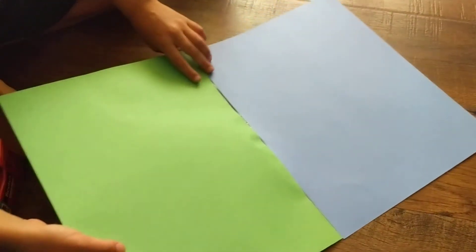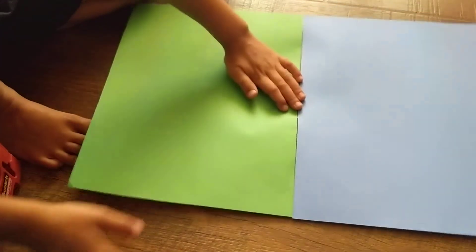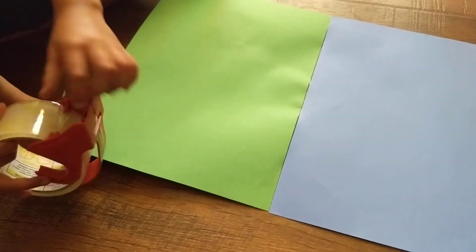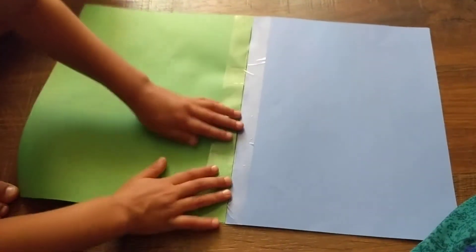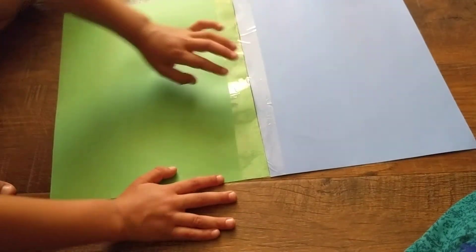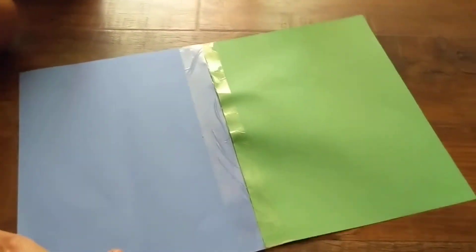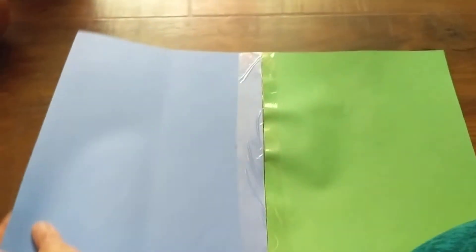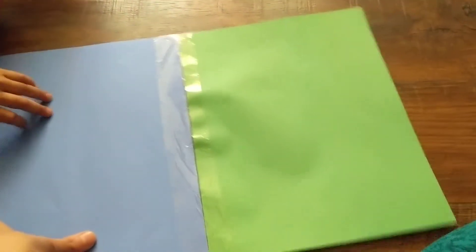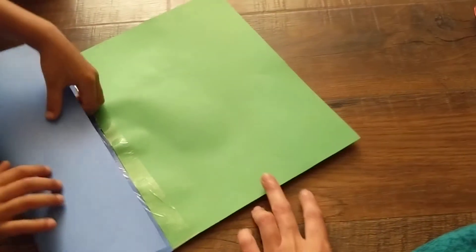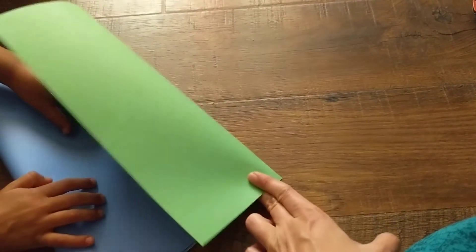You can use it as is like a book, but if you want to get a little fancy, you can fold this halfway through and fold the green halfway through.